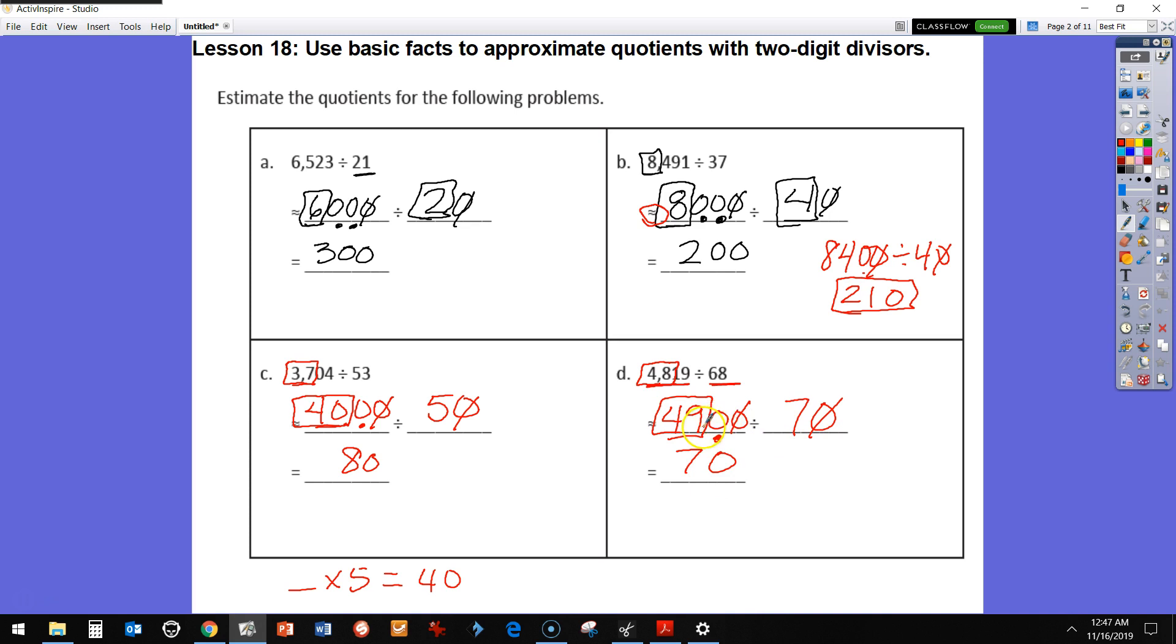You can write that out in uniform and say 49 tens divided by 7. In this case, remember, we already divided by 10 once, so we got rid of those other zeros when we divided by 10. So now 49 tens divided by 7 would be 7 tens, which is equal to 70.